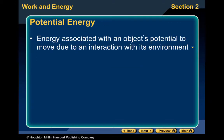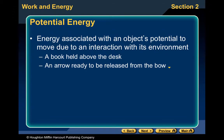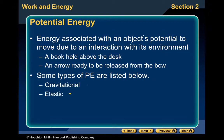Potential energy is the potential to move. A lot of times we use objects sitting up on a shelf — they have the potential to fall to the ground, which is potential energy. Examples include a book held above a desk, an arrow ready to be released from a bow. Types of potential energy include gravitational, elastic (like pulling a rubber band), and electromagnetic potential energy.